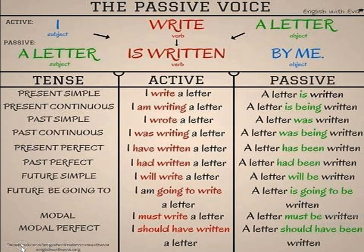Let us see some examples of active and passive. The active sentence 'I write a letter' has a subject, verb, and object. While becoming a passive sentence, we interchange the subject and the object — 'letter' becomes the subject, 'by me' becomes the object, and the verb 'write' changes to 'is written.' So 'I write a letter' in passive becomes 'A letter is written by me.' In the present simple tense, 'I write a letter' becomes 'A letter is written by me.'